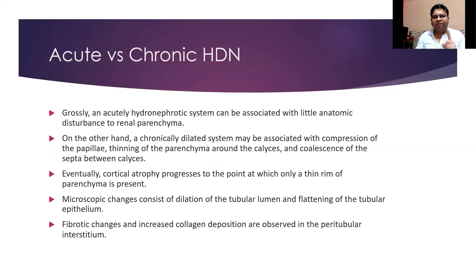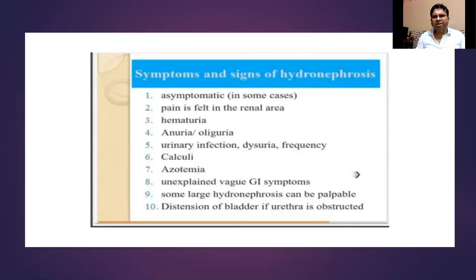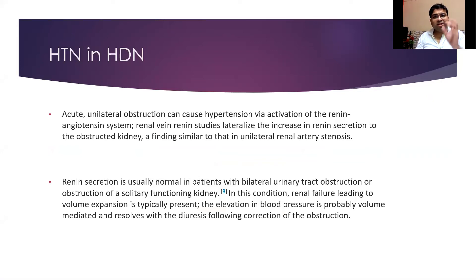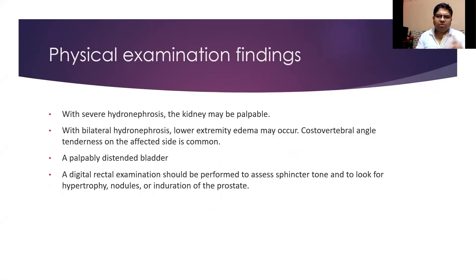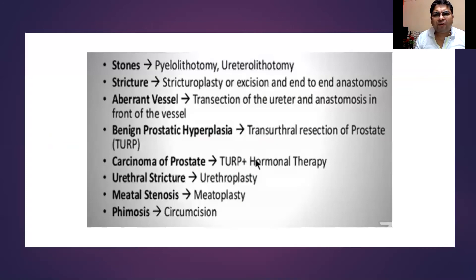Clinically, if you have bilateral hydronephrosis you must insert a catheter. Patients can also be asymptomatic and be worked up incidentally. Regarding hypertension: with unilateral obstruction it is angiotensin-induced, requiring a different treatment protocol; with bilateral obstruction it is volume-induced, so correcting the volume resolves the hypertension. On physical examination, check whether the kidneys are palpable, whether the bladder is palpable, and perform a digital rectal examination for the prostate and neurogenic status.